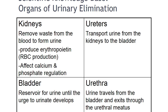Remember that urinary elimination depends on functioning of the kidneys, ureters, bladder, and urethra. We will do a quick review of the anatomy and physiology of the urinary system. The kidneys remove and filter waste from the blood to form urine. The nephron is the functional unit of the kidney and helps form urine. It is composed of the glomerulus, Bowman's capsule, the proximal convoluted tubule, the loop of Henle, the distal tubule, and the collecting duct.